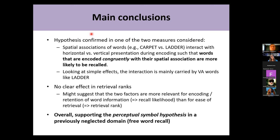The main conclusions are that the hypothesis was confirmed in one of the two measures considered, suggesting that the spatial associations of words — horizontal versus vertical — interact with horizontal versus vertical presentation during encoding, such that words encoded congruently with their spatial associations are more likely to be recalled. Looking at simple effects, this interaction is mainly carried by the vertical association words like ladder. There were no clear effects in retrieval ranks, which might suggest the two factors are more relevant for encoding and retention rather than ease of retrieval.